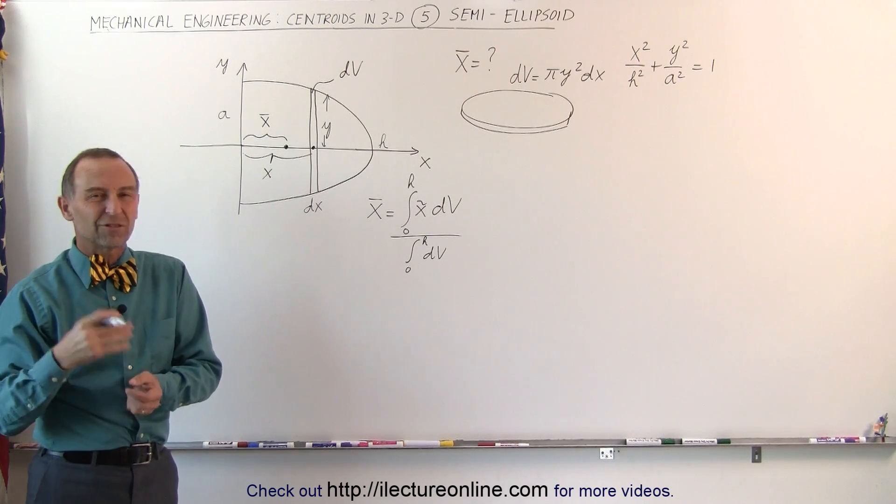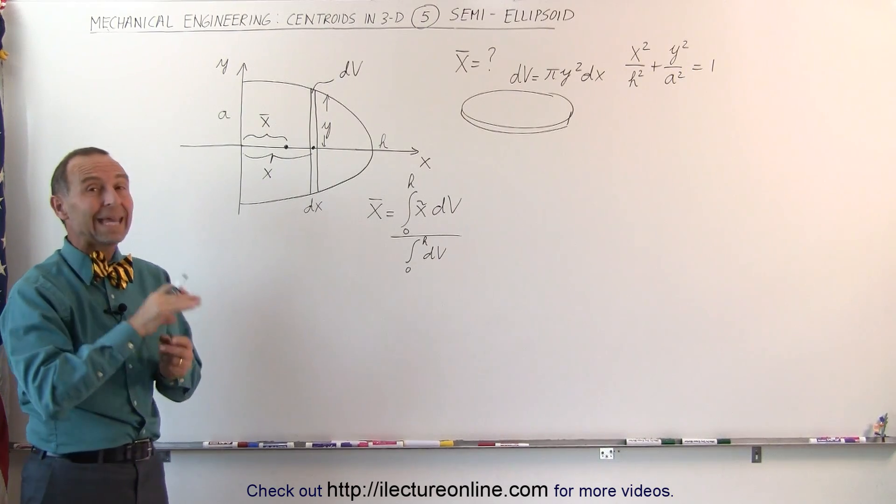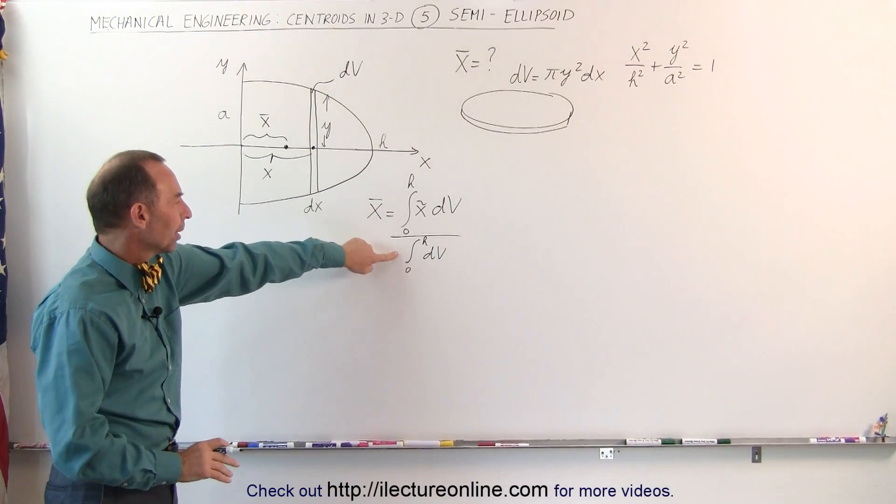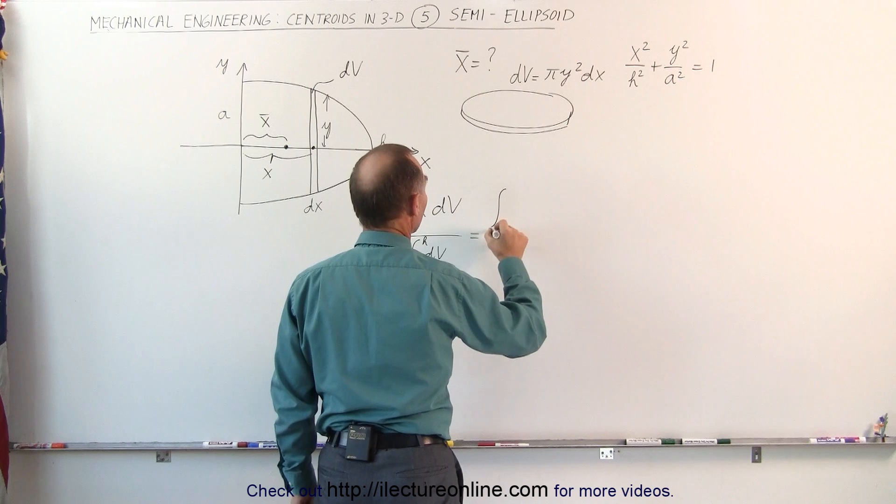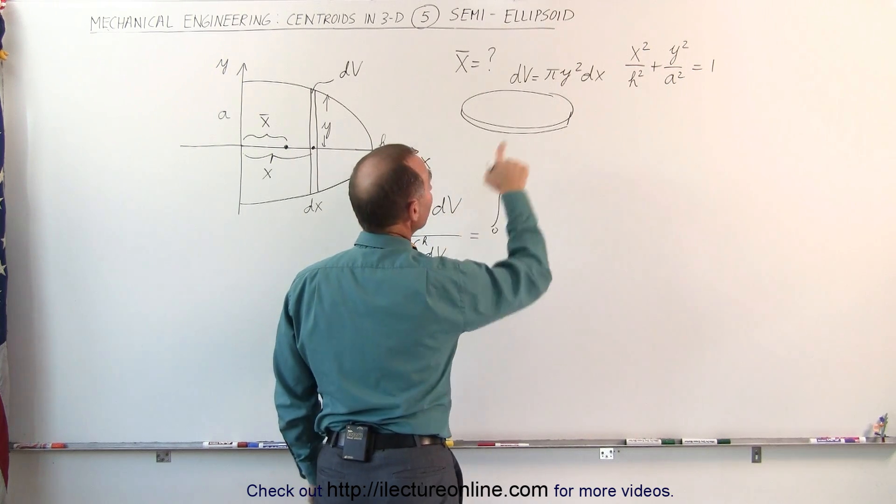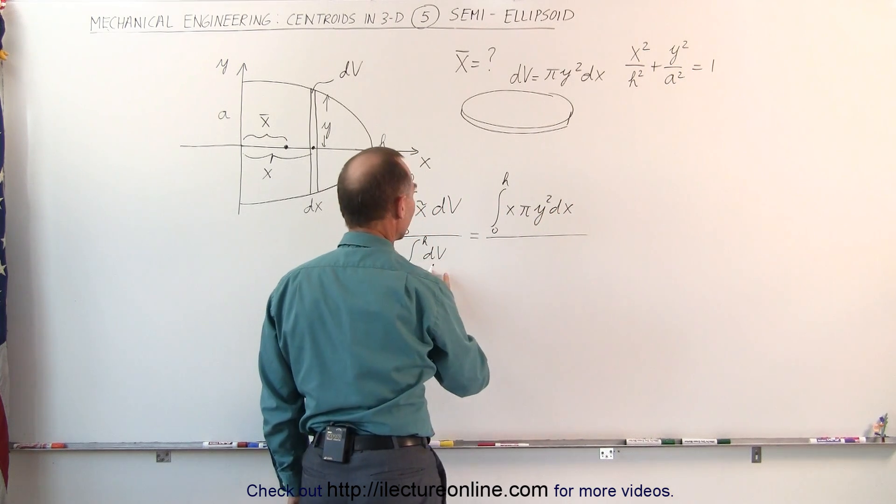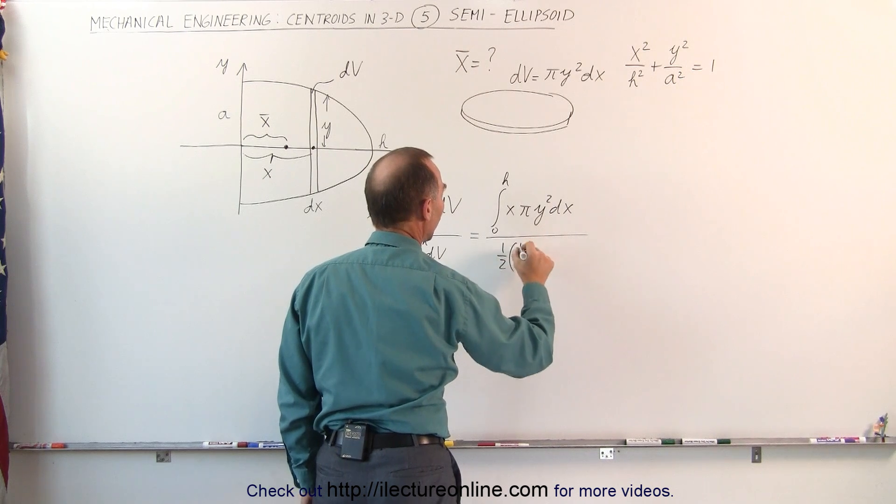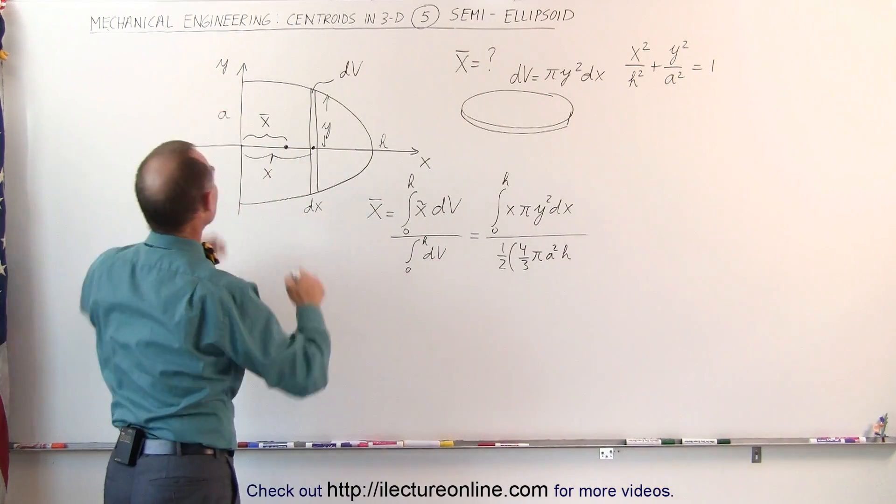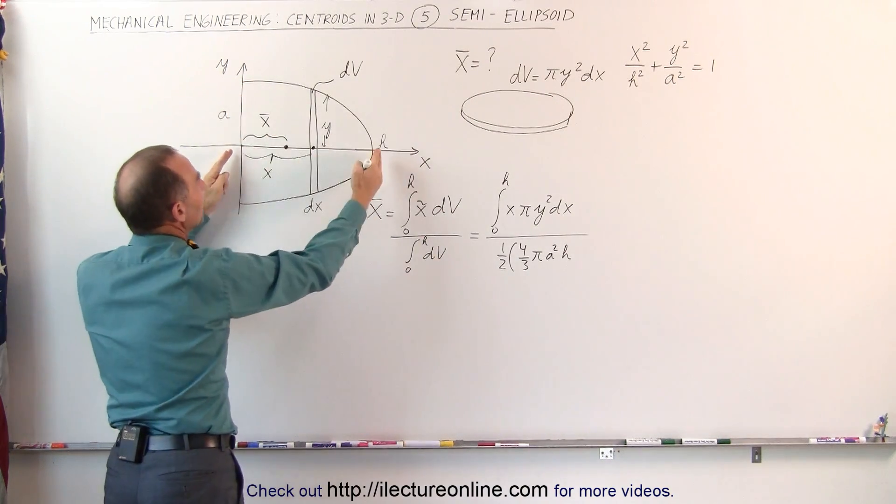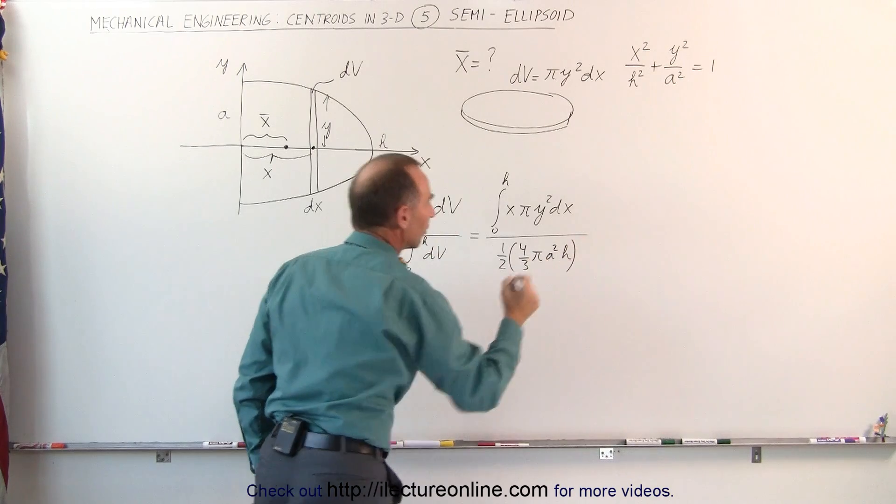We know that the volume of an ellipsoid is very similar to the volume of the sphere. Instead of using 4/3 πr³, we have 4/3 πa²h. We can go ahead and plug that into the denominator. For the numerator, we get the following. This is equal to the integral from 0 to h of x times dv, and dv is πy²dx, divided by the volume of a semi-ellipsoid, which is one-half the volume of a whole ellipsoid, which is 4/3 πa²h. Notice that a is the radius at the center, and h is the height or the distance from the center to the tip of the ellipsoid.